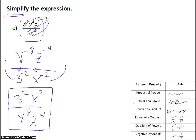When it's simplified, you know you're done simplifying if you don't have the same variable on the top and the bottom, or if you don't have two variables of the same type on the top. And also, you don't want any negative exponents.